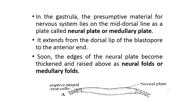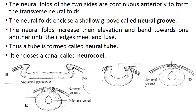Soon the edges of the neural plate become thickened. These two thickened edges start to rise above the surface, and a groove forms in the midline. This rising of the edges results in the neural fold or medullary fold. The neural folds of the two sides are continuous anteriorly to form the transverse neural fold, and they arise from the anterior to the posterior side.